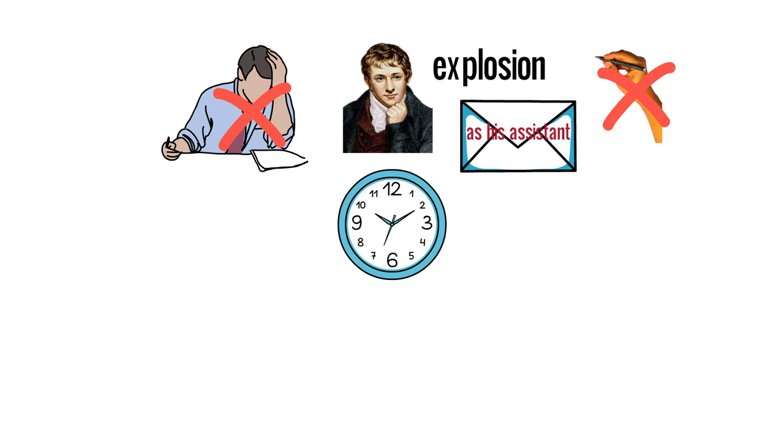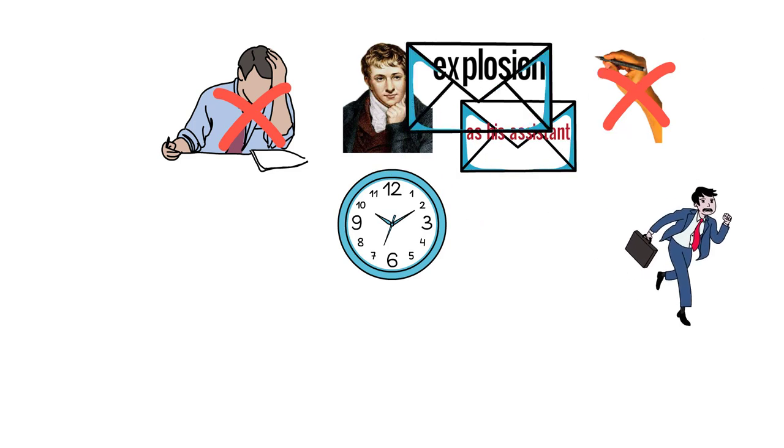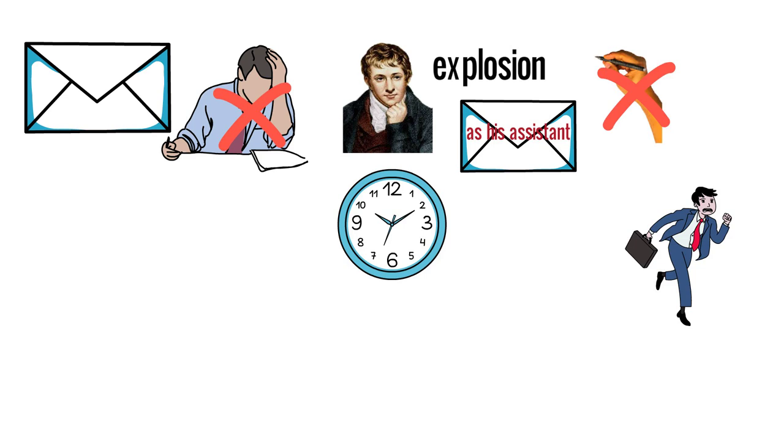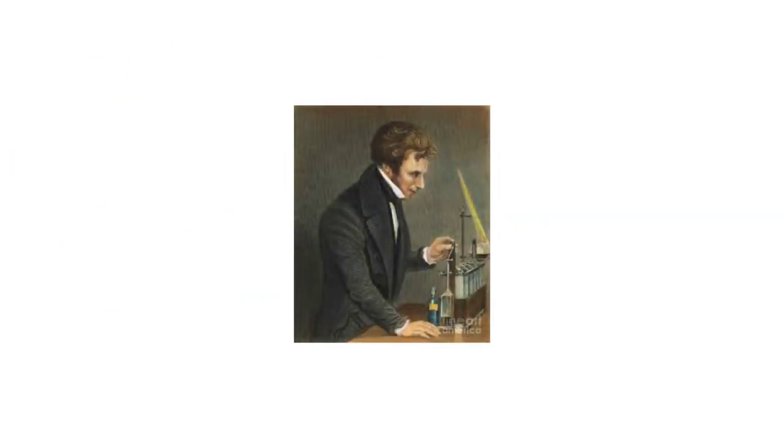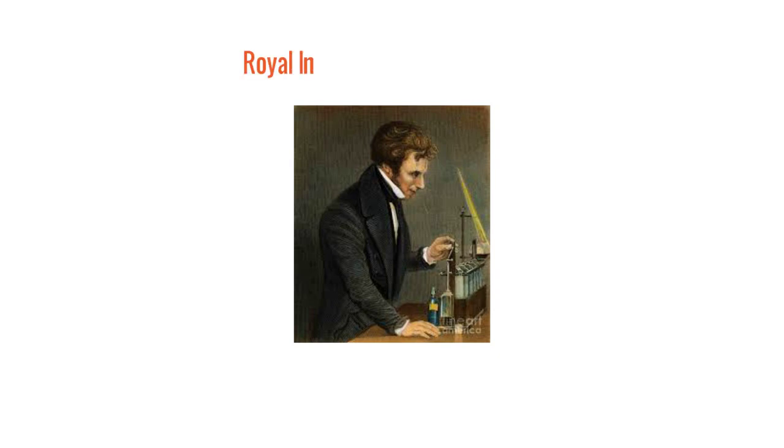Soon after this, one of Davy's laboratory assistants was fired for misconduct. And Davy sent a message to Faraday and asked him, if you would like the job of chemical assistant, then you can join me. This was a good opportunity for Faraday. After that, Faraday began work at the Royal Institution of Great Britain at the age of 21, on March 1, 1813.